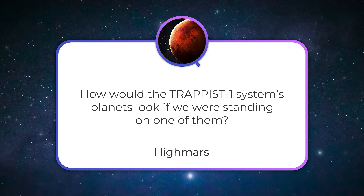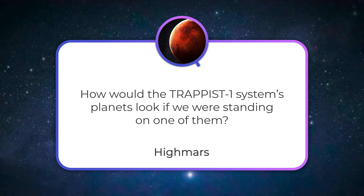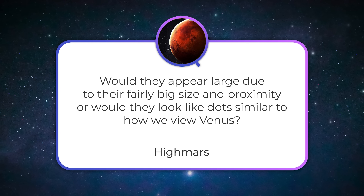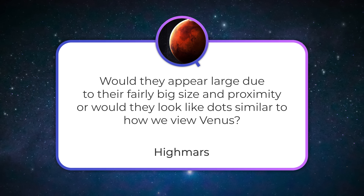How would the TRAPPIST-1 system's planets look if we were standing on one of them? Would they appear large due to their fairly big size and proximity, or would they look like dots, similar to how we view Venus? So because the planets in the TRAPPIST-1 system are part of a red dwarf system, they are a lot closer to the star, and the separation between the planets is more similar to the distance between the Earth and the Moon.